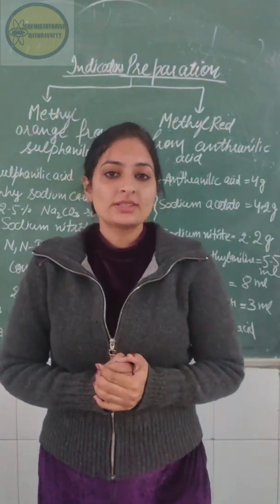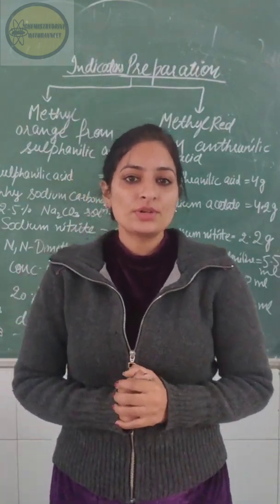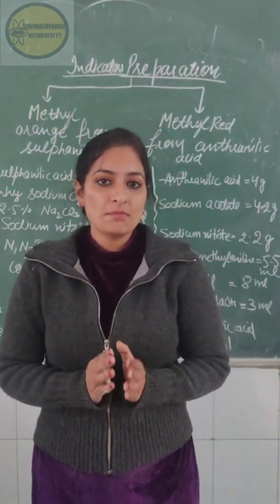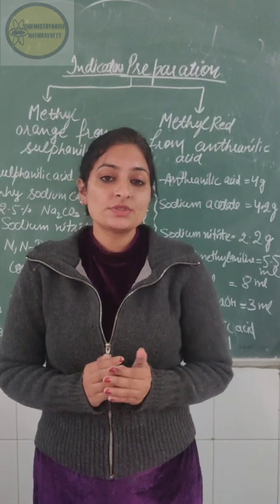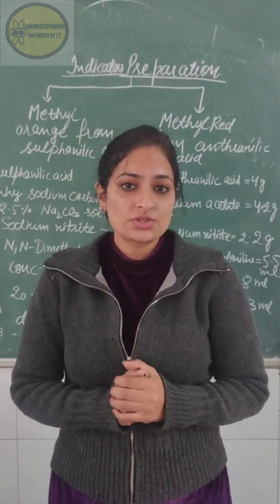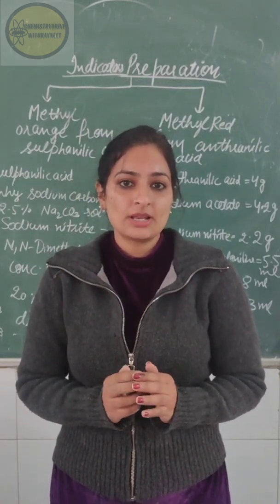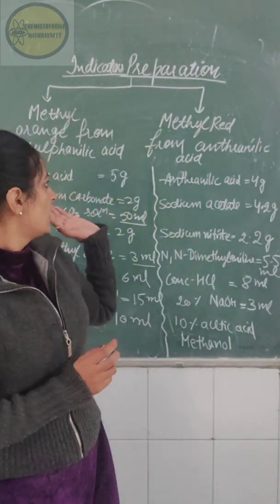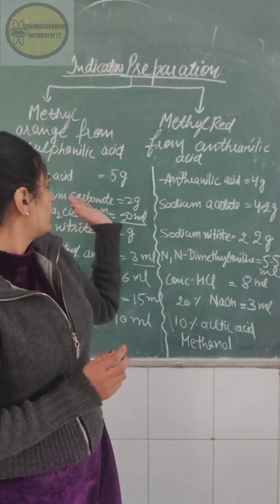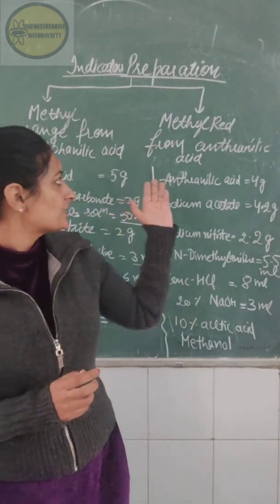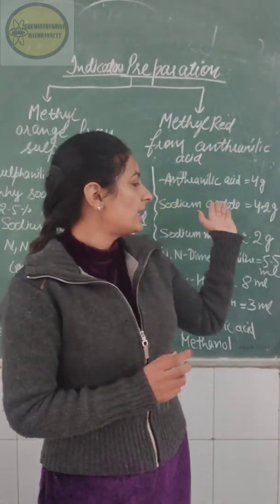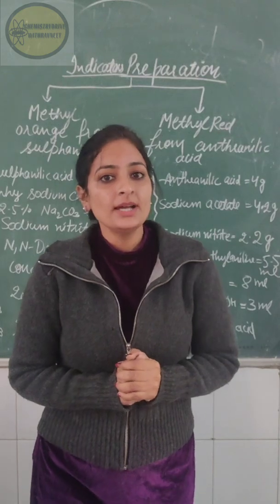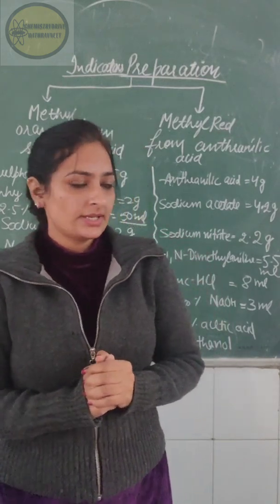Hello dear students, today in this video we are going to learn how to prepare two very important indicators which we use during the acid-base titration in our chemistry lab. The very first one is methyl orange, which we will prepare from sulfanilic acid, and the second one is methyl red, which we are going to prepare from anthranilic acid.